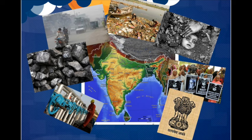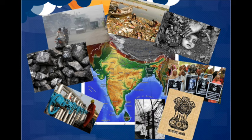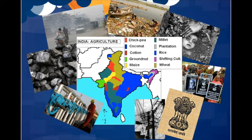India is the third largest coal producer in the world. They also import a lot of oil and are the world's fifth largest provider of electricity. India also has a long history in fishing and natural gas industries. Irrigation is also a major part of agriculture in India, and some crops being produced include chickpeas, coconut, cotton, groundnut, maize, millet, rice, and wheat.